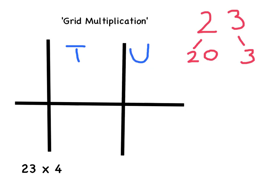Now we have drawn the grid we can put our partition numbers into it. So remember we partition 23 into 20 and 3. Because 20 is the tens we put it in the tens column and 3 is the units we put it in the units column.